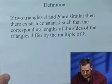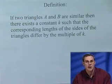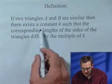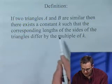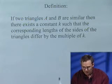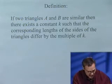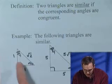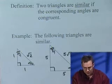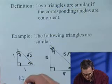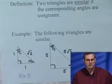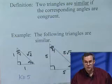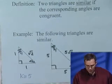So let's define a constant here. Let's say we have two triangles, I'm just going to call them A and B. If two triangles A and B are similar, then there exists a constant K such that the corresponding lengths of the sides of the triangles differ by the multiple of K. In other words, if we look at that last example, we have to find a number that we can multiply all these sides by to get these sides. Notice in this example, K was equal to 5. 5 times 1 is 5, 5 times 1 is 5, 5 times √2 is 5√2.